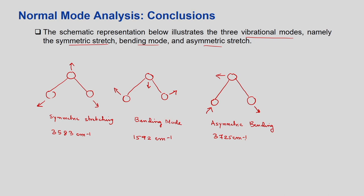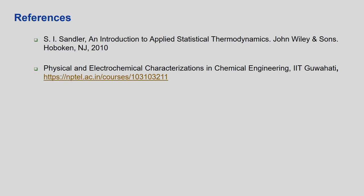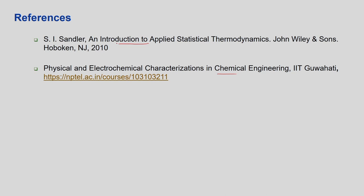As the number of atoms increases, so do the degrees of freedom, and the mathematics become more complex. All vibrational temperatures and wave numbers are derived similarly - the matrix size keeps increasing and solutions become more complicated. You can look up standard textbooks for derivations of larger molecules. I also refer you to the NPTEL course on physical and electrochemical characterization in chemical engineering where IR spectra are discussed in detail, and Sandler's textbook for partition functions and vibrational states.